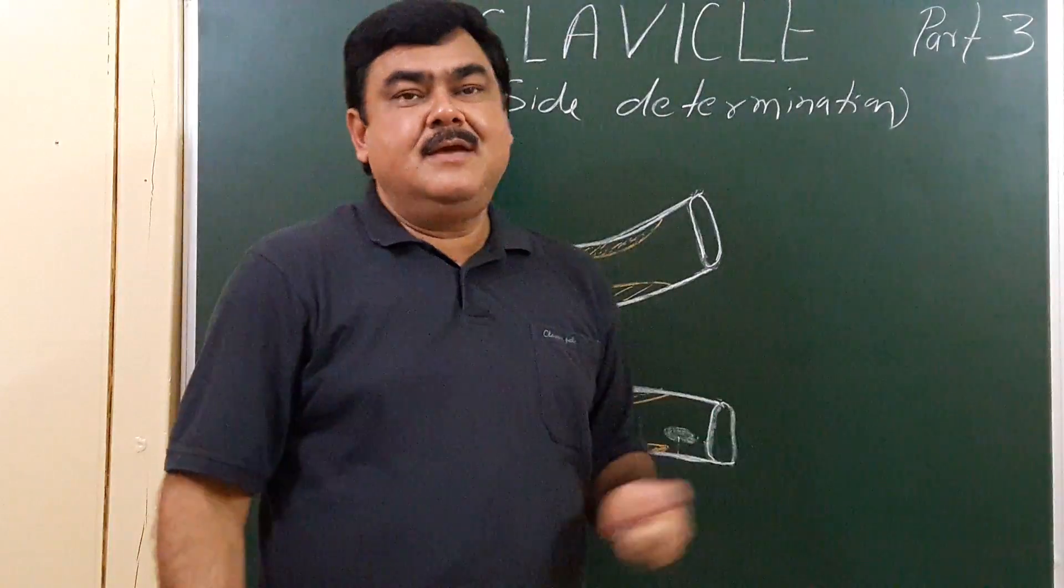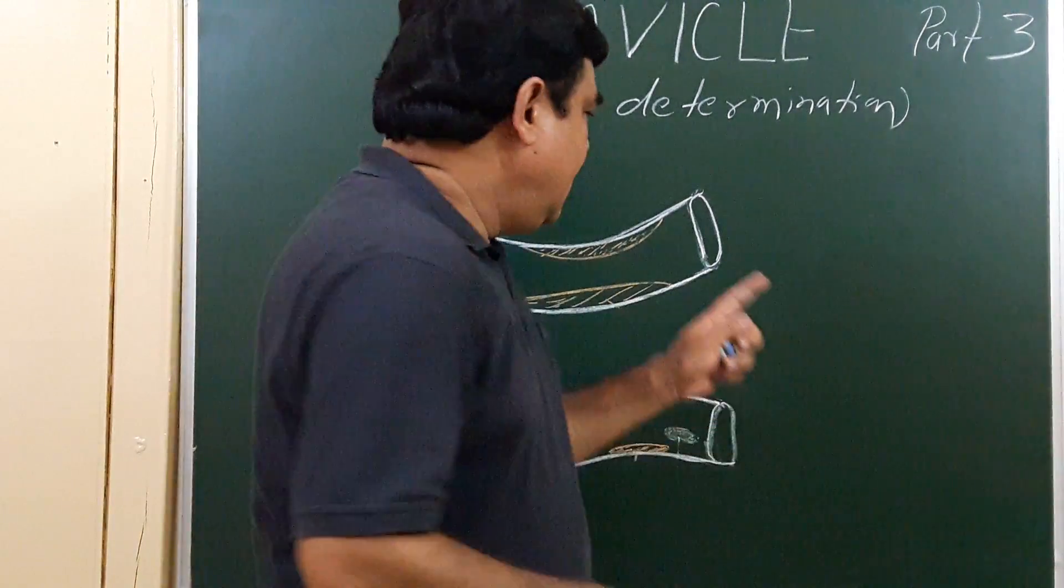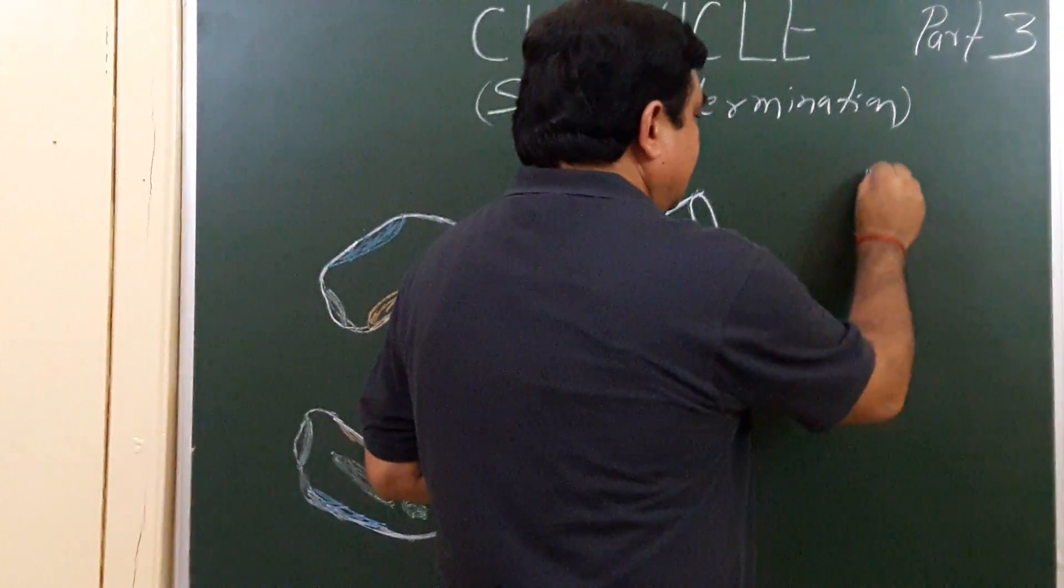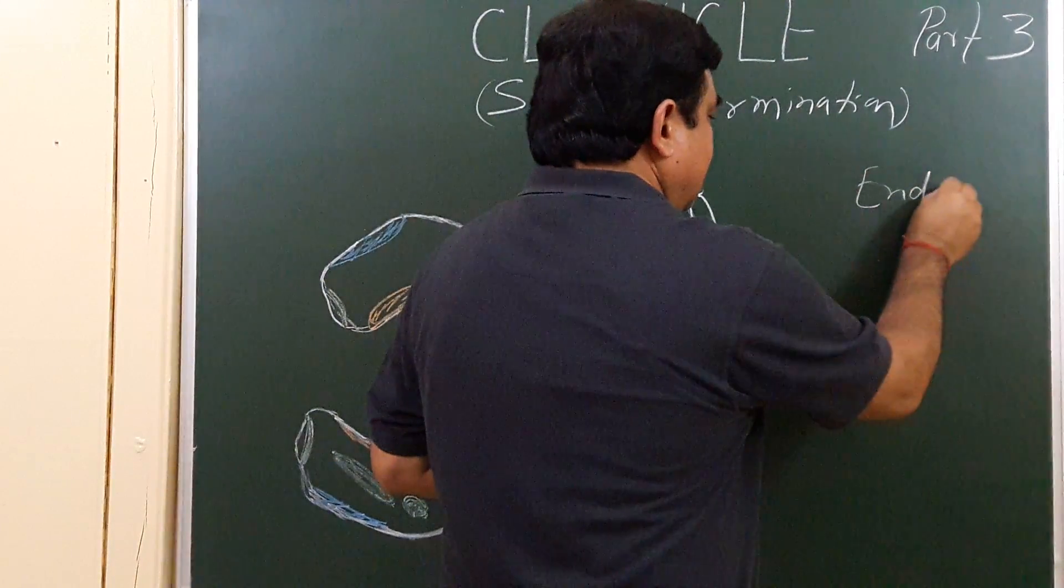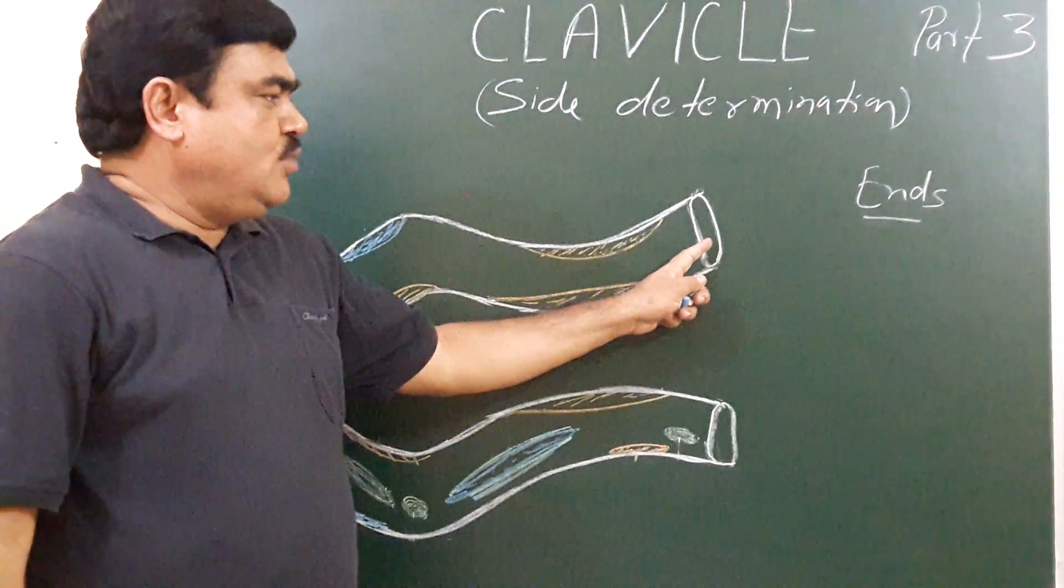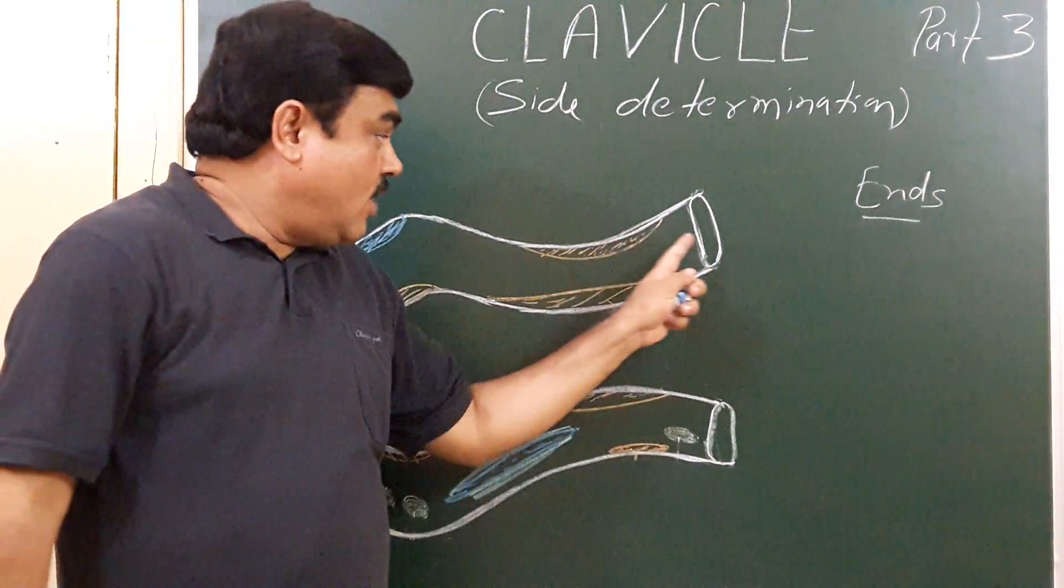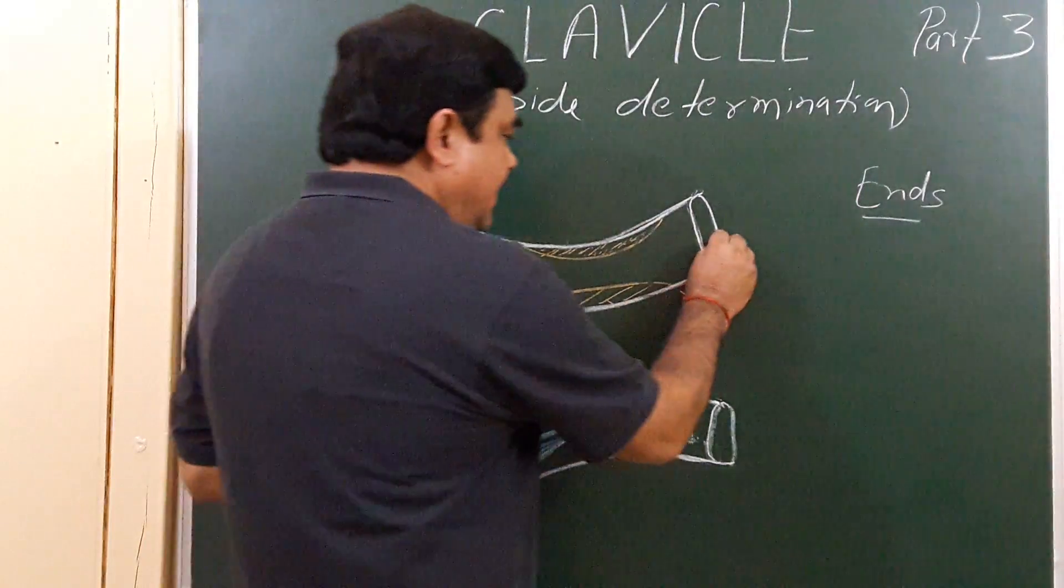Three things are important for side determination. First is the ends. You see, it has two ends: medial end and lateral end. The medial end is quadrangular, and the lateral end is flat.